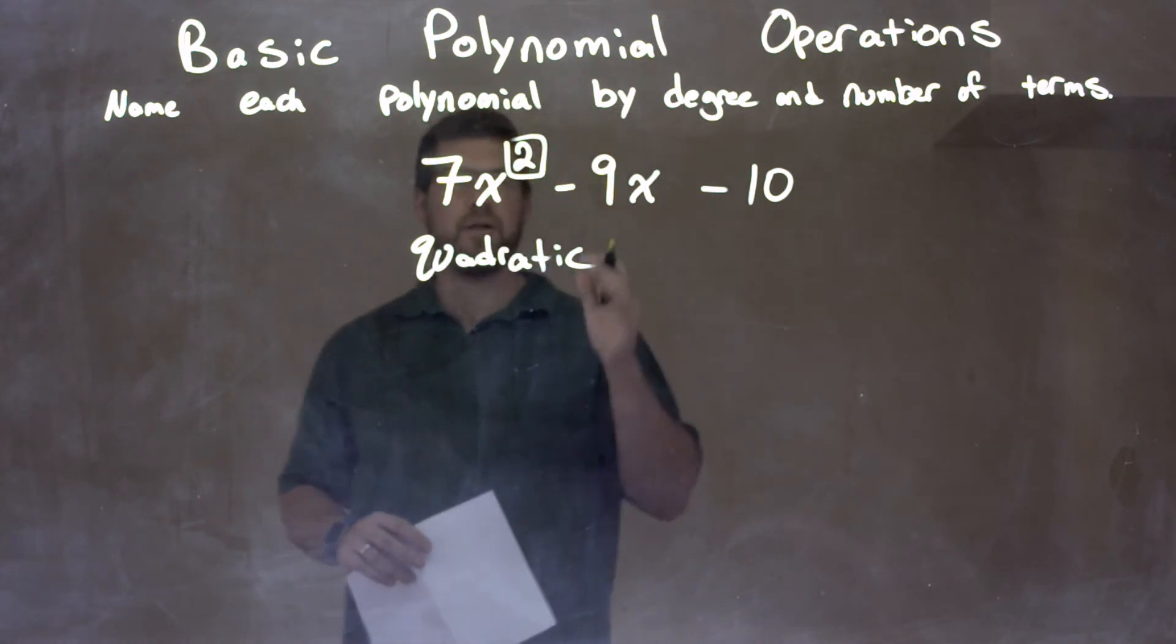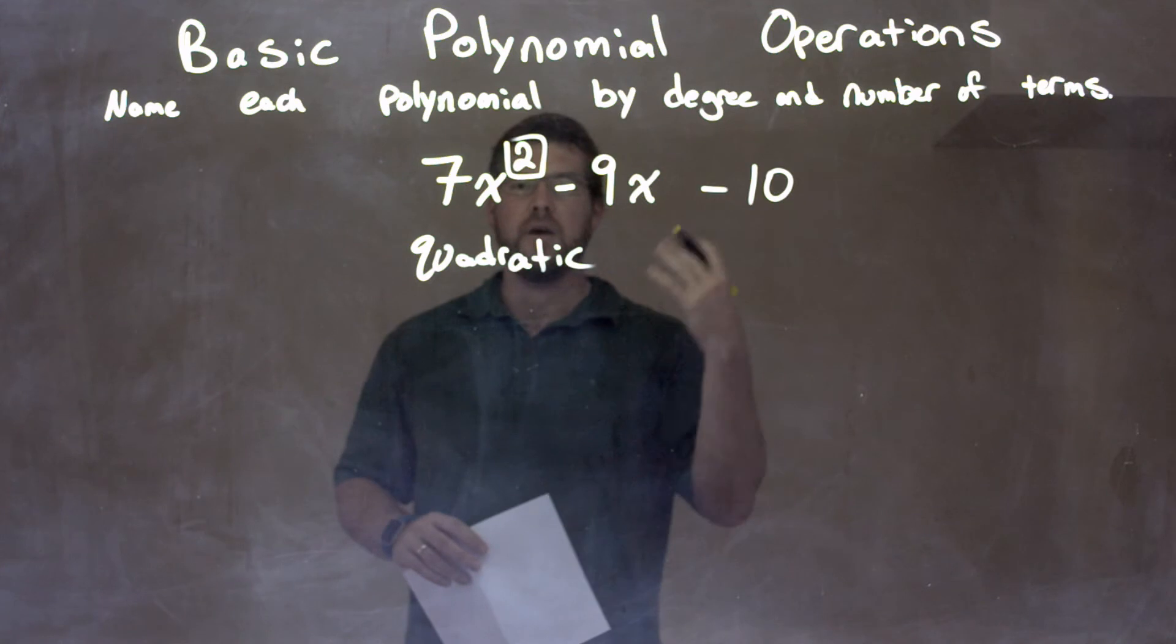Then from there, we have 1, 2, 3 terms. Three terms there, it's a trinomial.